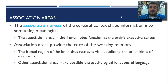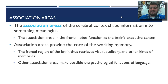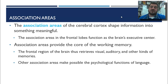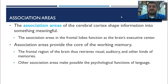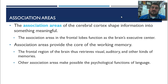Association areas of the cerebral cortex shape information into something meaningful — so instead of just seeing an eight-sided red object with white letters, we know that it's a stop sign. This is the brain's executive center. These association areas also provide the core of our working memory, or short-term memory — this is where we store stuff we're currently thinking about. The frontal region then retrieves visual, auditory, and other kinds of memories.